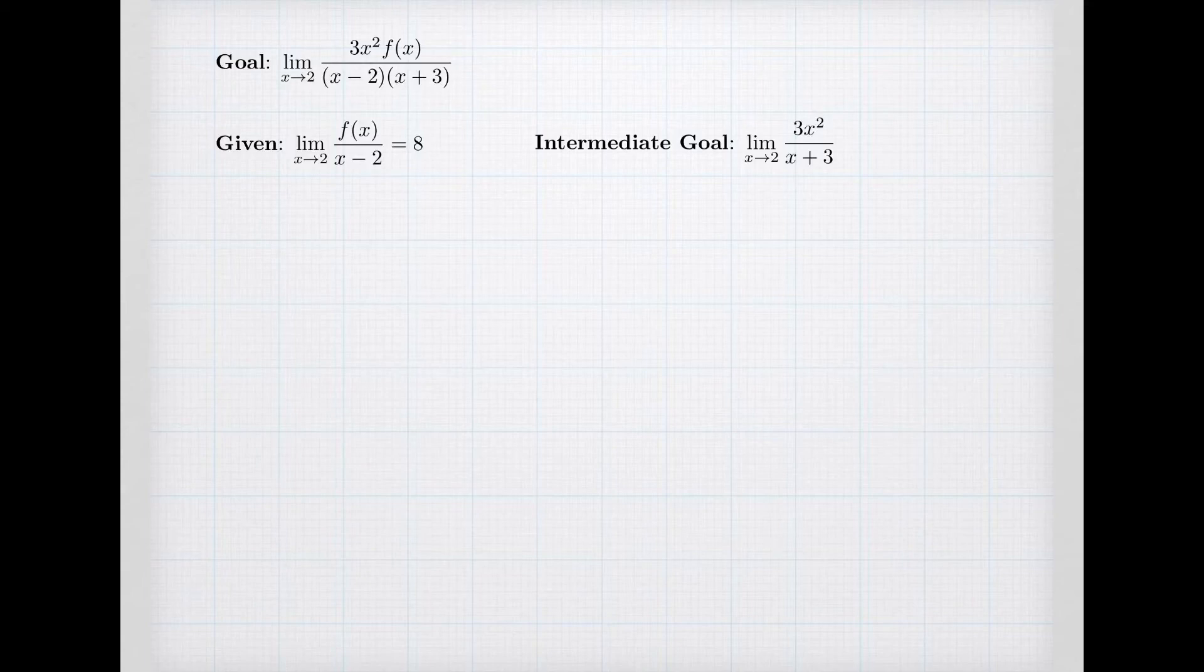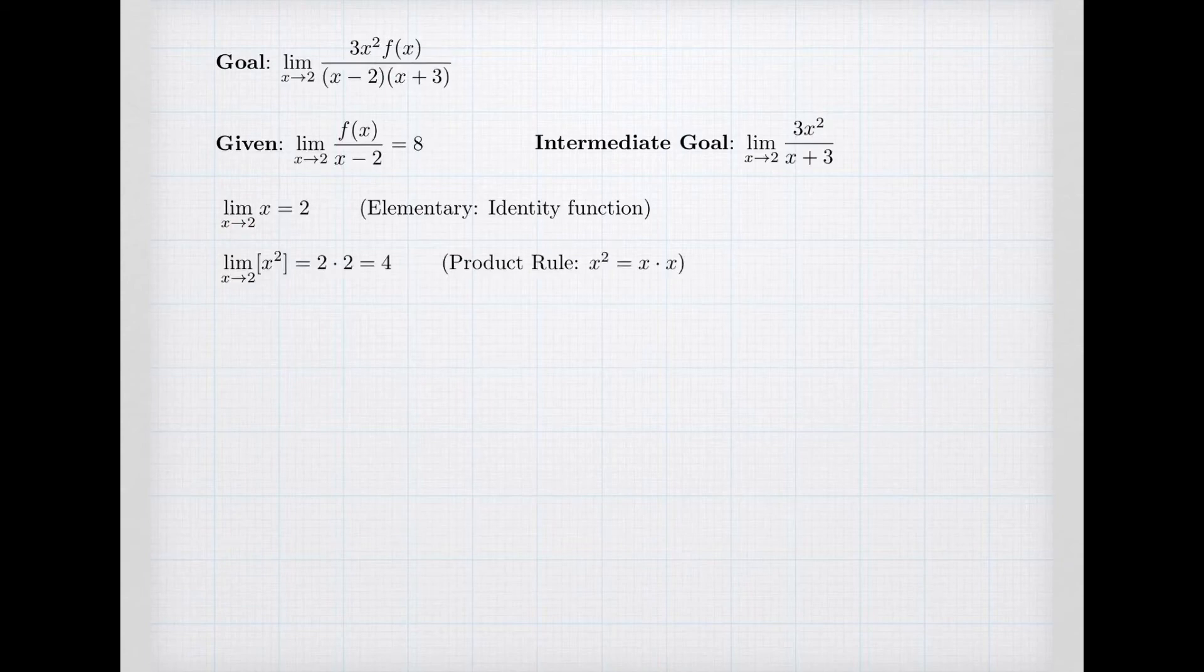We start with our elementary limits. We know that our formula involves x and so we need the limit of x. And the identity function, if x is going to 2, the limit is 2. Second, x² appears in my formula and x² is x times x. And so we're doing a limit rule. This is the product rule. The limit of a product is the product of the limits. And so the limit of x² will be 2 times 2 or 4.